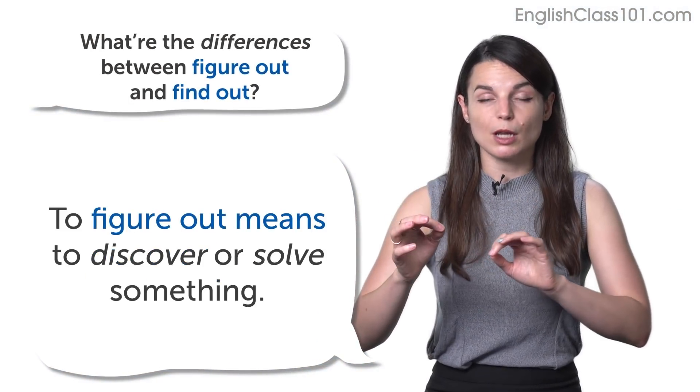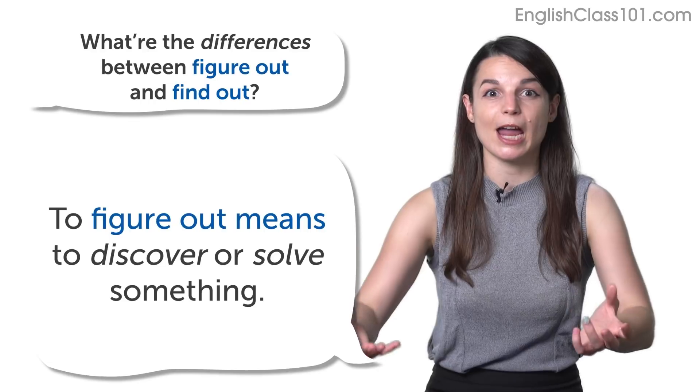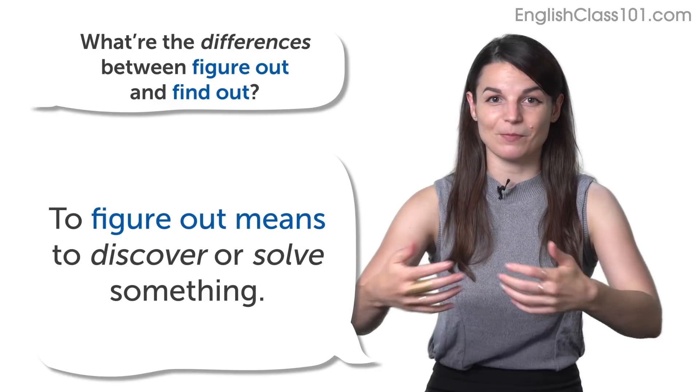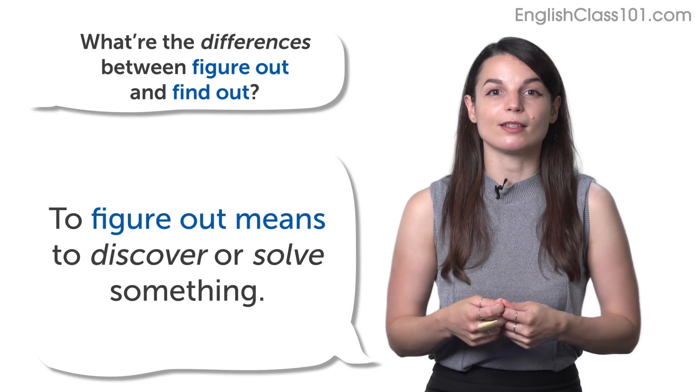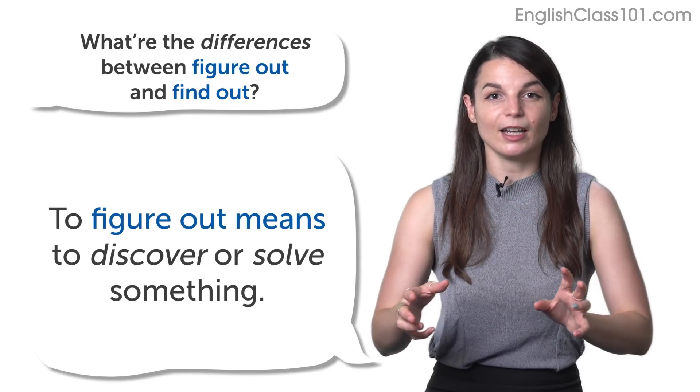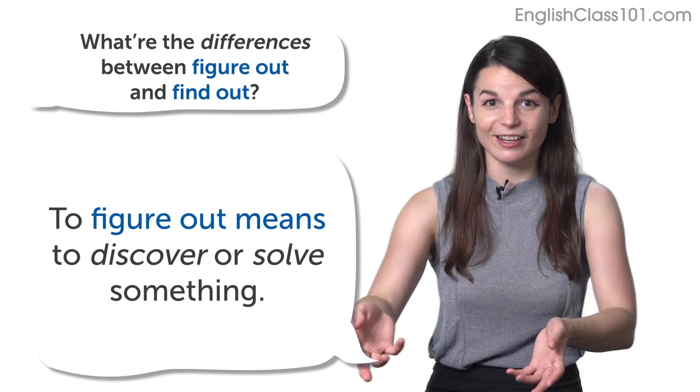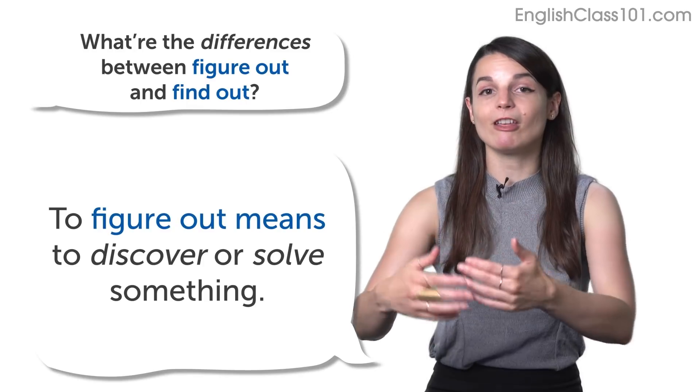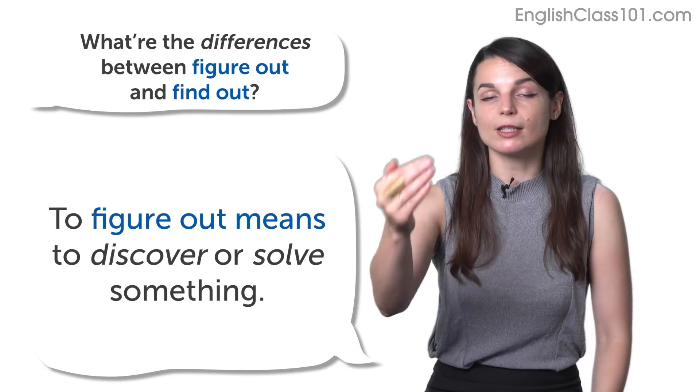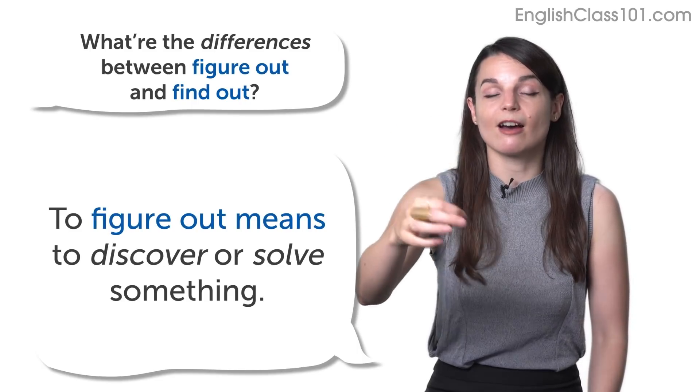To figure out means to discover something or to solve something like a puzzle or maybe a crime or some kind of difficult situation. You figured out a secret maybe. So, a good example of this is like a crime or a police TV show where they have to solve a mystery, right? So, they do lots of research. They talk to people. They do interviews. And maybe at the end of the show, they figure out the person who did it. They find the criminal. So, to figure something out refers to doing research and working really hard to discover something new.